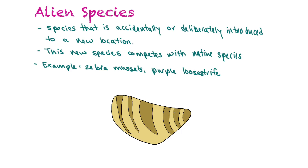An alien species is a species that is accidentally or even deliberately introduced to a new location, competing with native species and sometimes forcing them out. An example would be zebra mussels — they came over from other countries in the ballast of ships, survived well in our Great Lakes, and eat up some of the food sources for our fish.